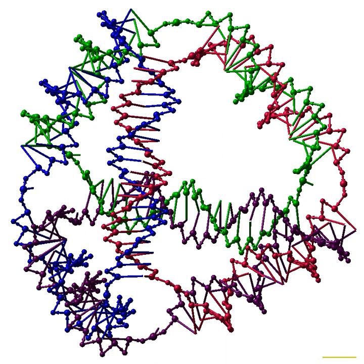The first step in designing a nucleic acid nanostructure is to decide how a given structure should be represented by a specific arrangement of nucleic acid strands, determining the secondary structure—the positions of the base pairs that hold the individual strands together in the desired shape. Several approaches have been demonstrated. In the tile-based approach, the target structure is broken into smaller units with strong binding between strands contained in each unit and weaker interactions between units; it is often used to make periodic lattices and to implement algorithmic self-assembly for DNA computing. This was the dominant design strategy from the mid-1990s until the mid-2000s, when the DNA origami methodology was developed.